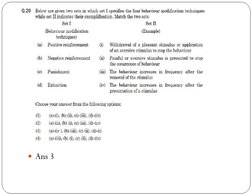Question 20: Set 1 specifies four behavior modification techniques — positive reinforcement, negative reinforcement, punishment, and extinction — while Set 2 indicates their exemplifications. Positive reinforcement: you do something good and receive praise or reward — the child is energized to repeat the act. For example, a child says 'thank you' in public and receives a chocolate as a reward, encouraging repetition. Negative reinforcement: stopping giving something also affects behavior — if the child says bad words and the mother says she will not give chocolate, that reinforces the habit of using good words.